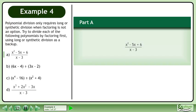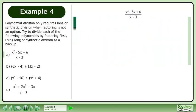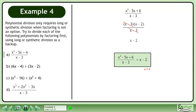In part a, we'll divide x²-5x+6 by x-3. Factor x²-5x+6 to get (x-3)(x-2). Cancel out x-3 from the numerator and denominator. The result of the division is x-2. We have the restriction that x cannot equal 3 since we divided by x-3.